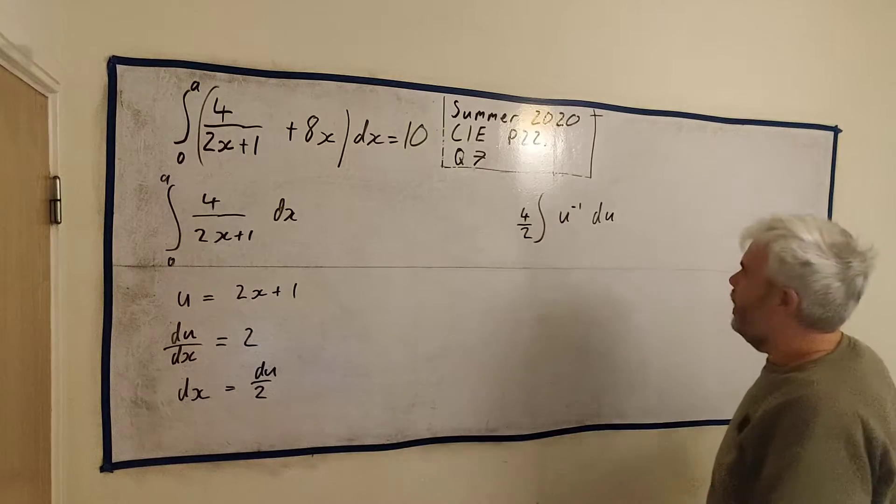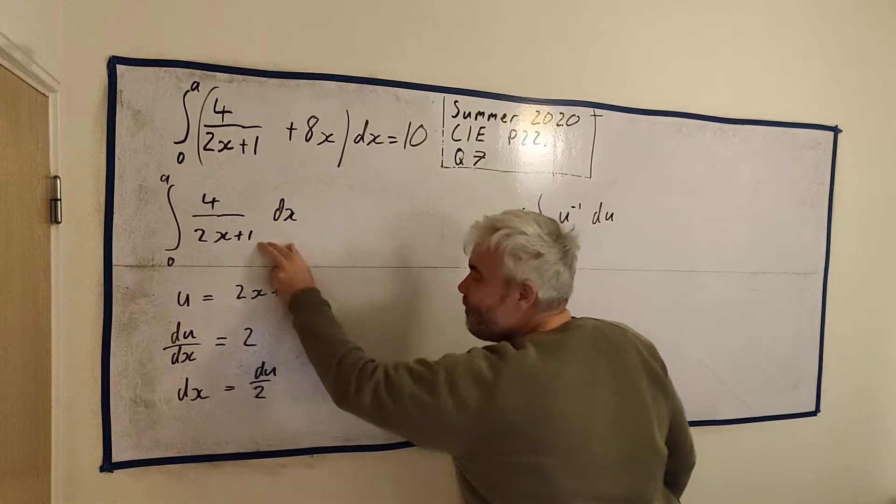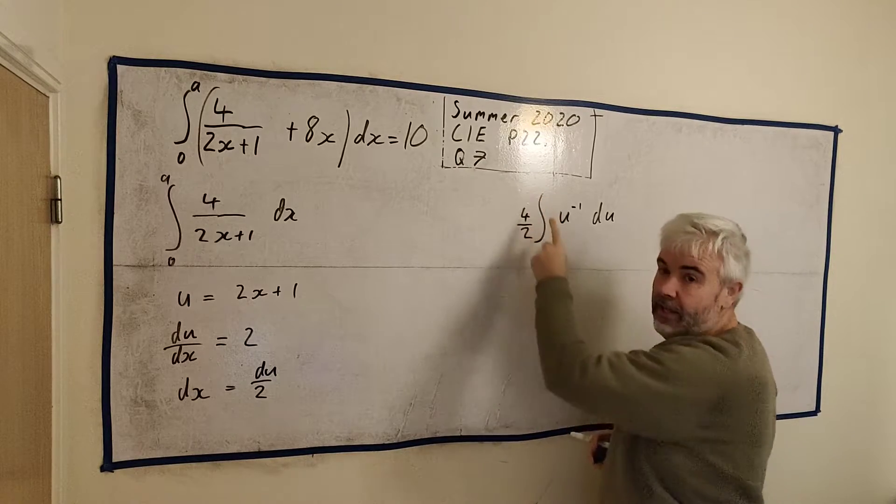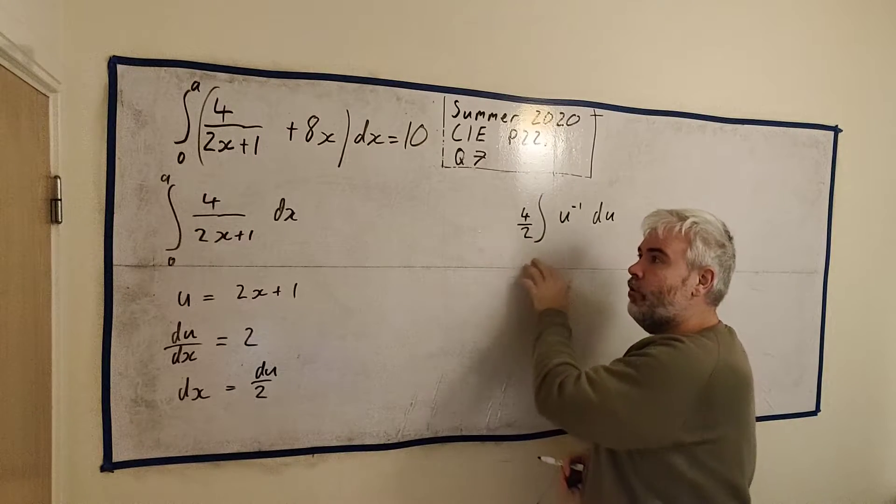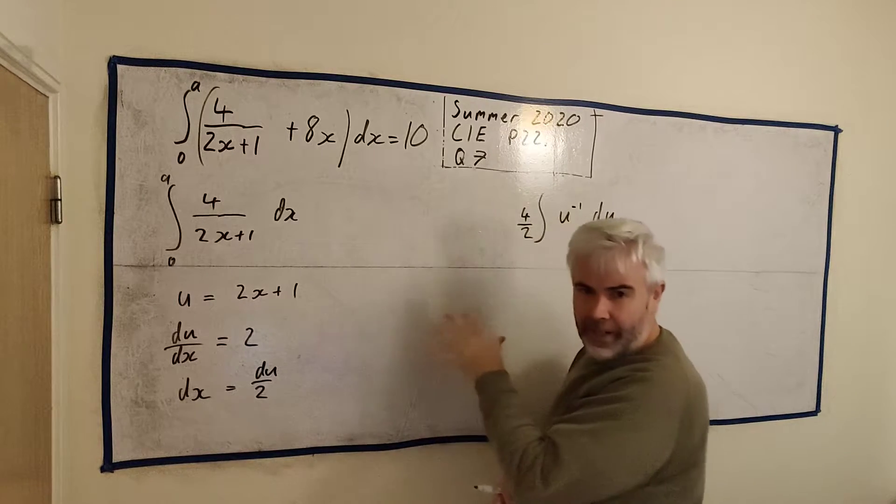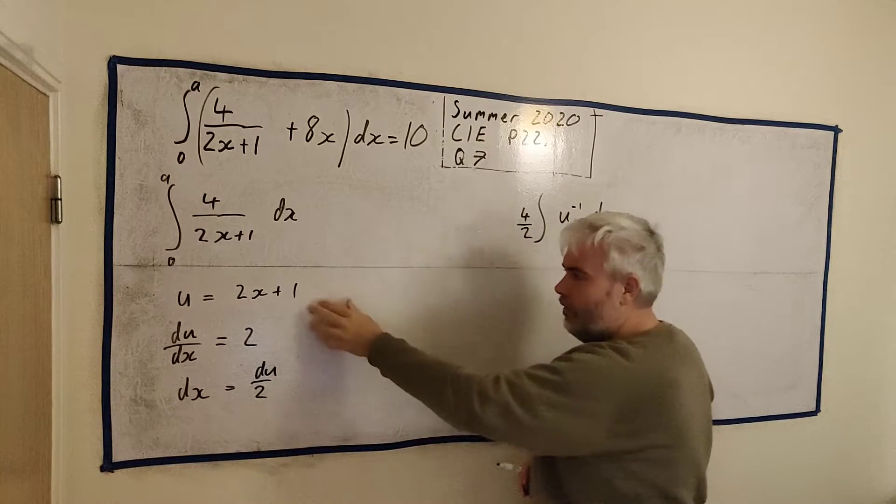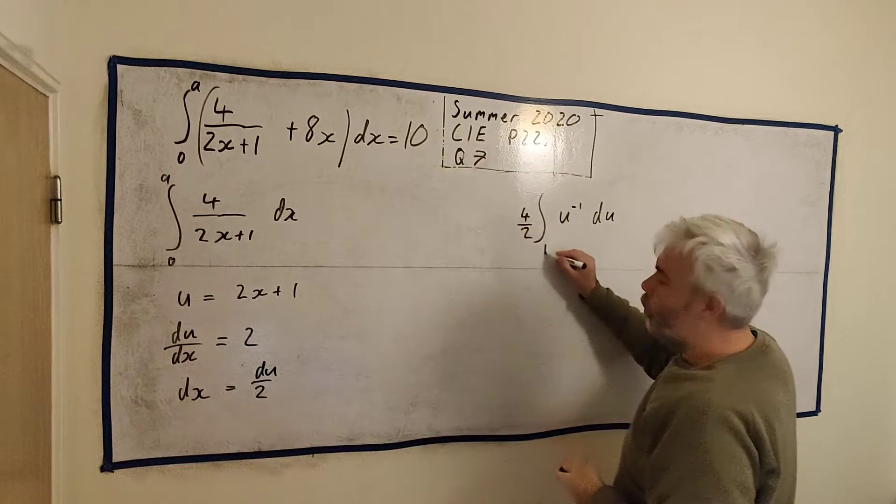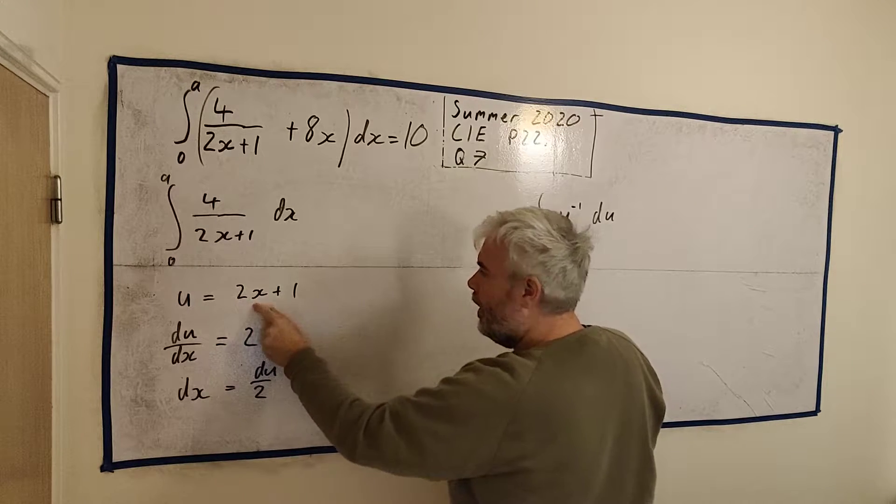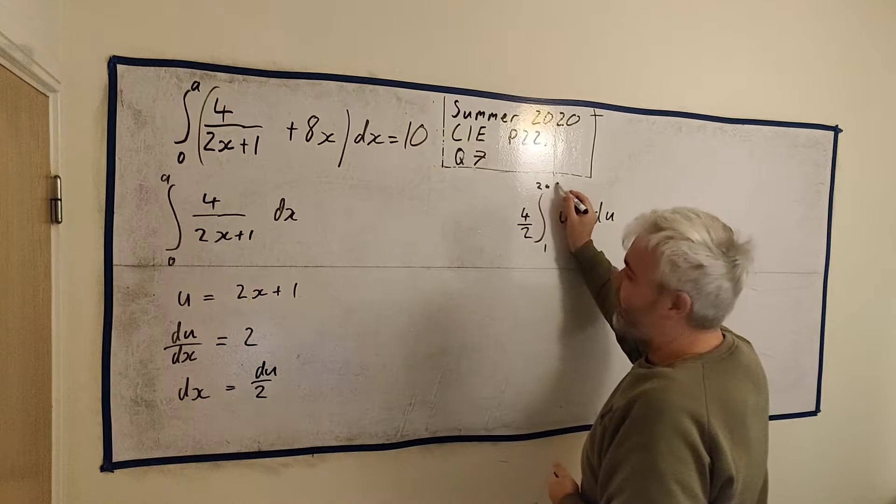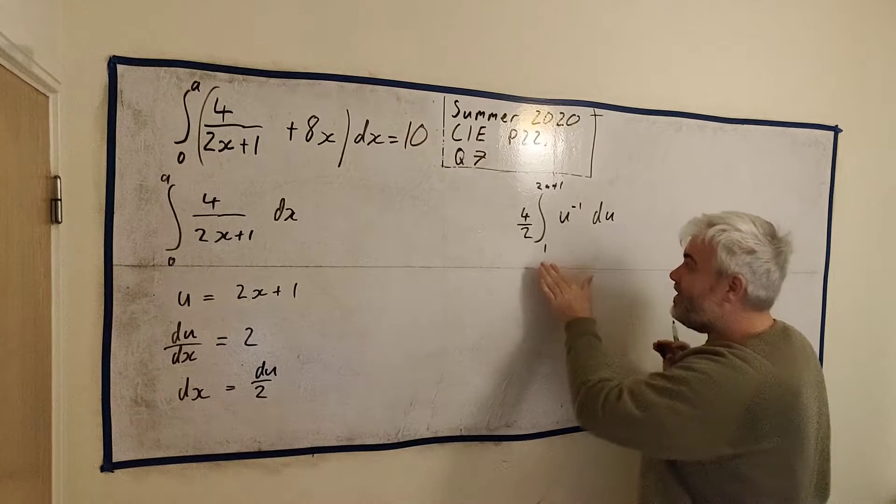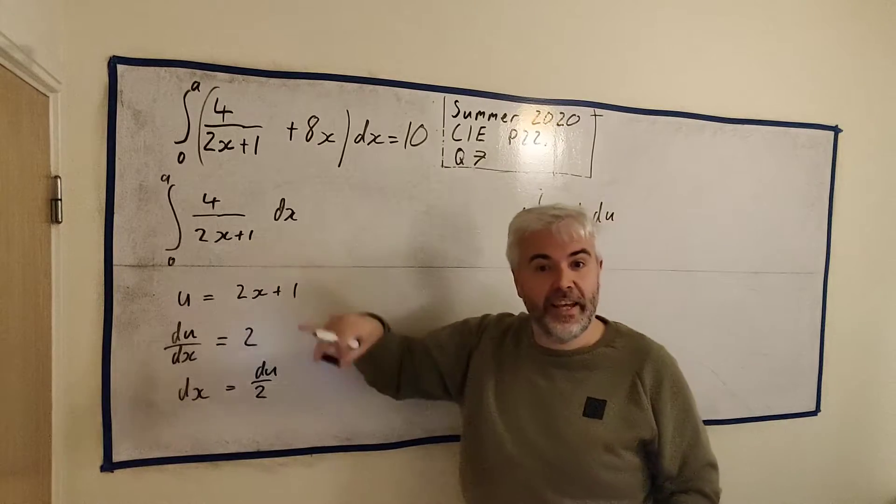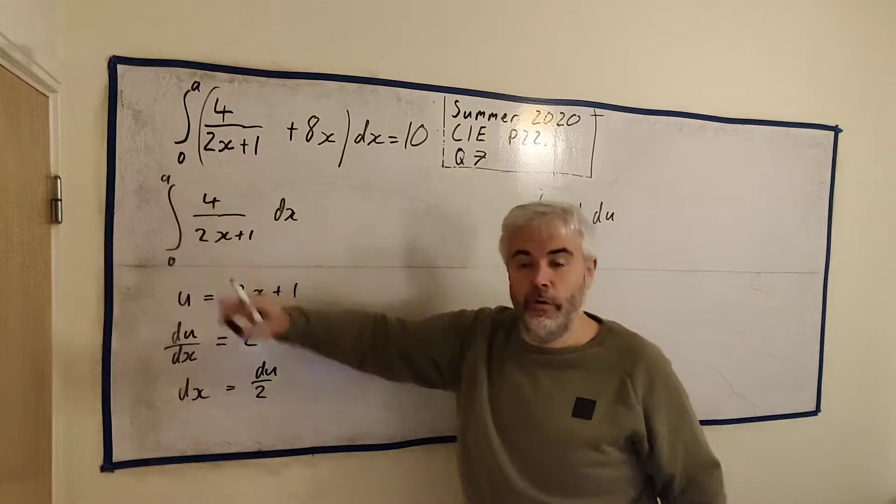If we rearrange this, dx we really want to replace. So if we bring dx over the 2 underneath and change the signs, we'll just get dx is equal to du over 2. And now we can, instead of dx, we have our 4, we brought it outside. Instead of our 2x plus 1, we put a u to the minus 1. So instead of dx, I'm going to put du divided by 2.